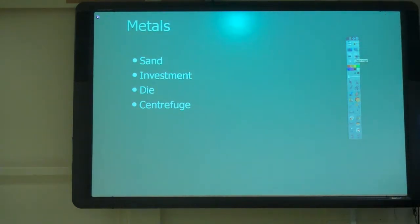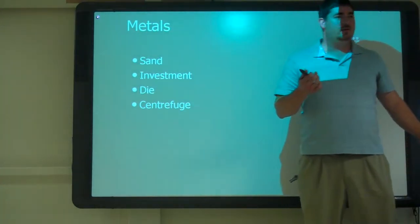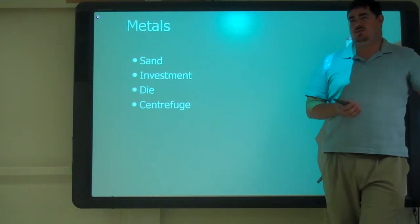So in metals, we've got four main types. We have sand casting. We saw one type of sand casting, right? So what kind of sand do they use on that one?